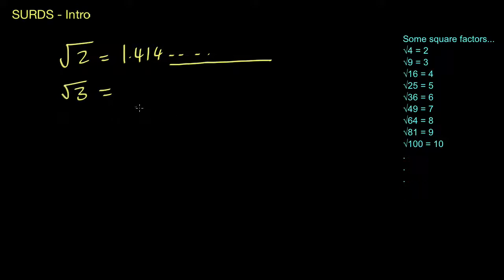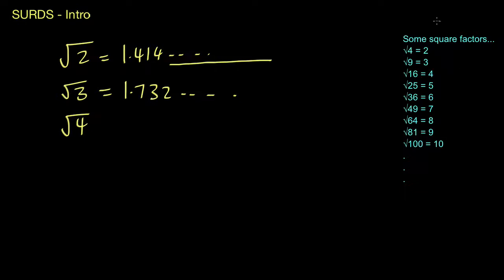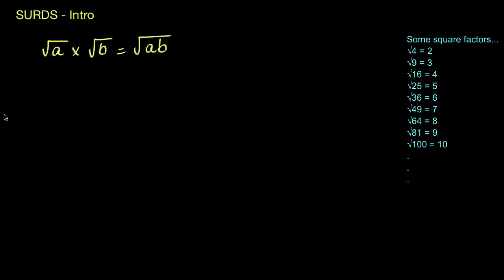Another surd you might see is the square root of 3. The square root of 3 is a different irrational number that would come out as 1.732, with those numbers once again going on forever. If you move on to the square root of 4, we don't call that a surd, because you can see we've got these things called square factors — the square root of 4 gives you the whole number 2.